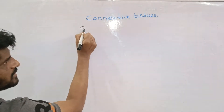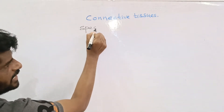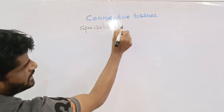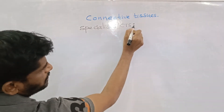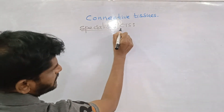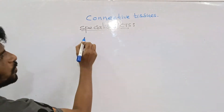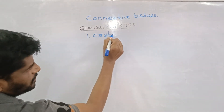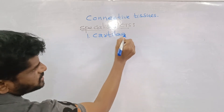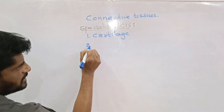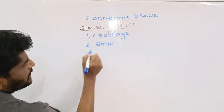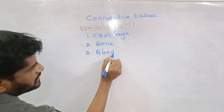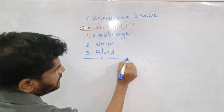There are some specialized connective tissues — this is a very important point. One is the cartilage, second is the bone, and one more is the blood. These are the three specialized connective tissues.